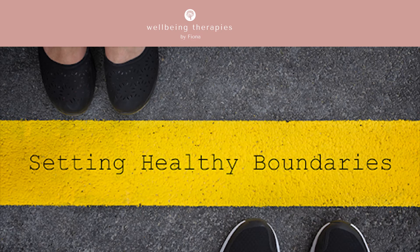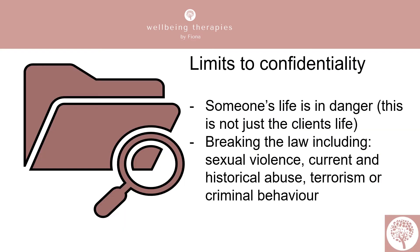We then moved on to Module 4 and looked at the importance of setting boundaries in the helping relationship. Boundaries are set to protect you and the other person and help you both understand what you can expect from the relationship. This applies to the counsellor, the client and other people you work with. It's important to consider your physical safety, your psychological safety and the emotional safety of all parties. Within this module we looked at the limits of confidentiality — this is so important. The limits of confidentiality must be fully discussed with the client in the initial contracting discussions. The client must understand that if they disclose something that breaks the law or places themselves or someone else at risk, you are duty bound to report what you know to the authorities.